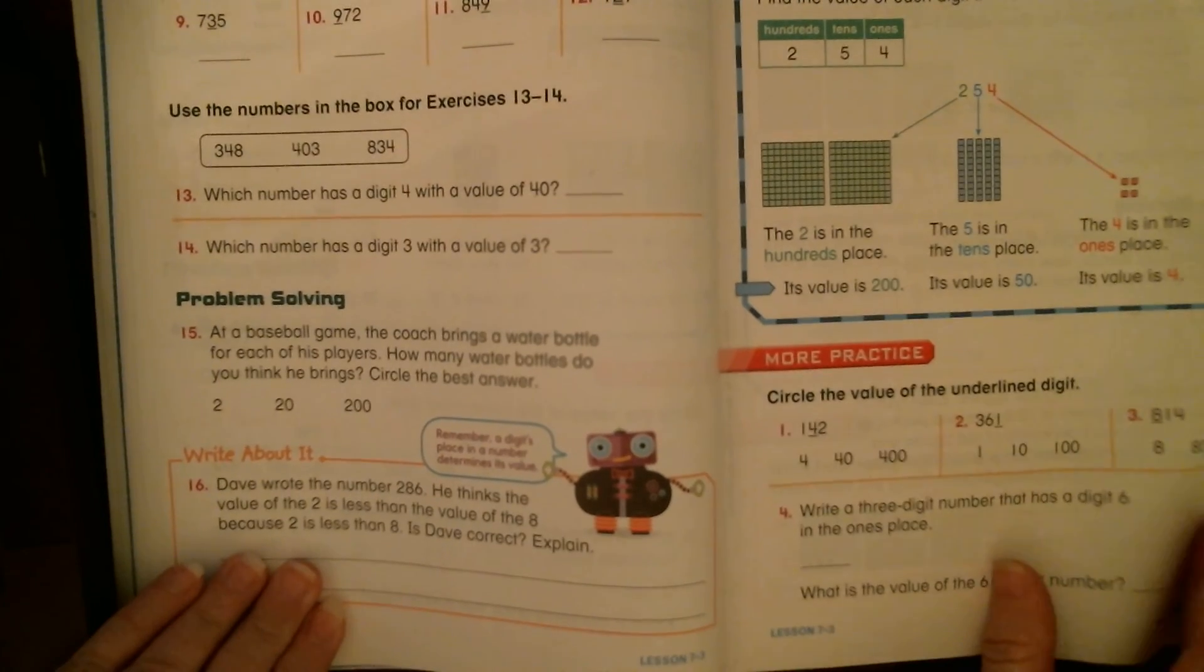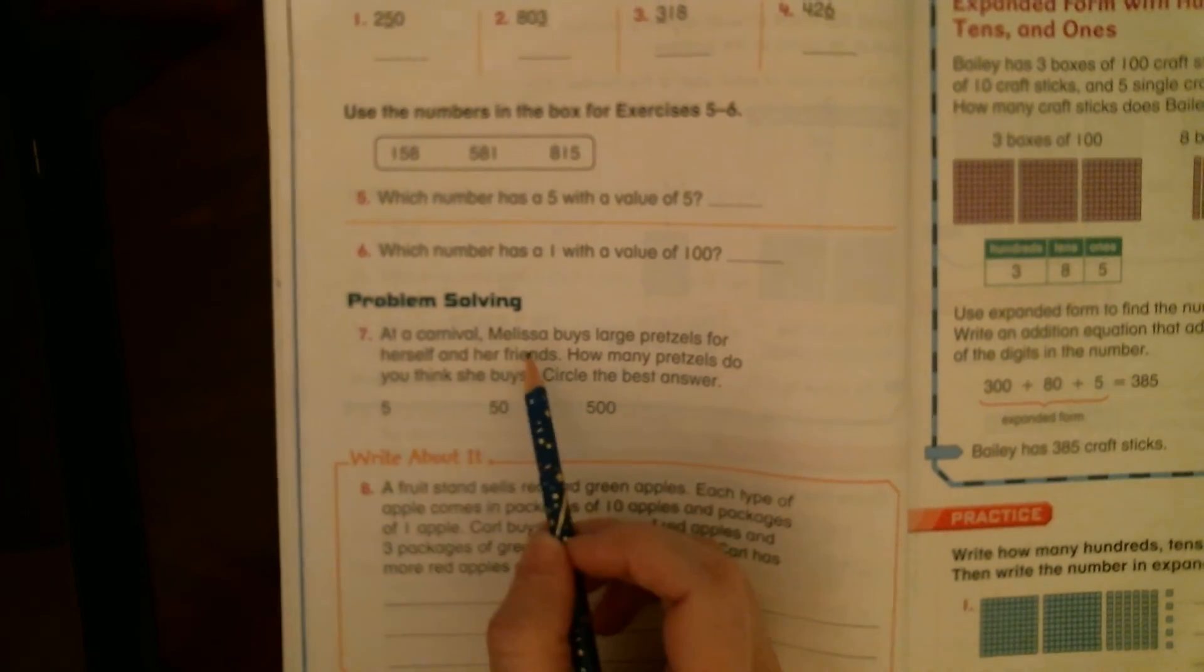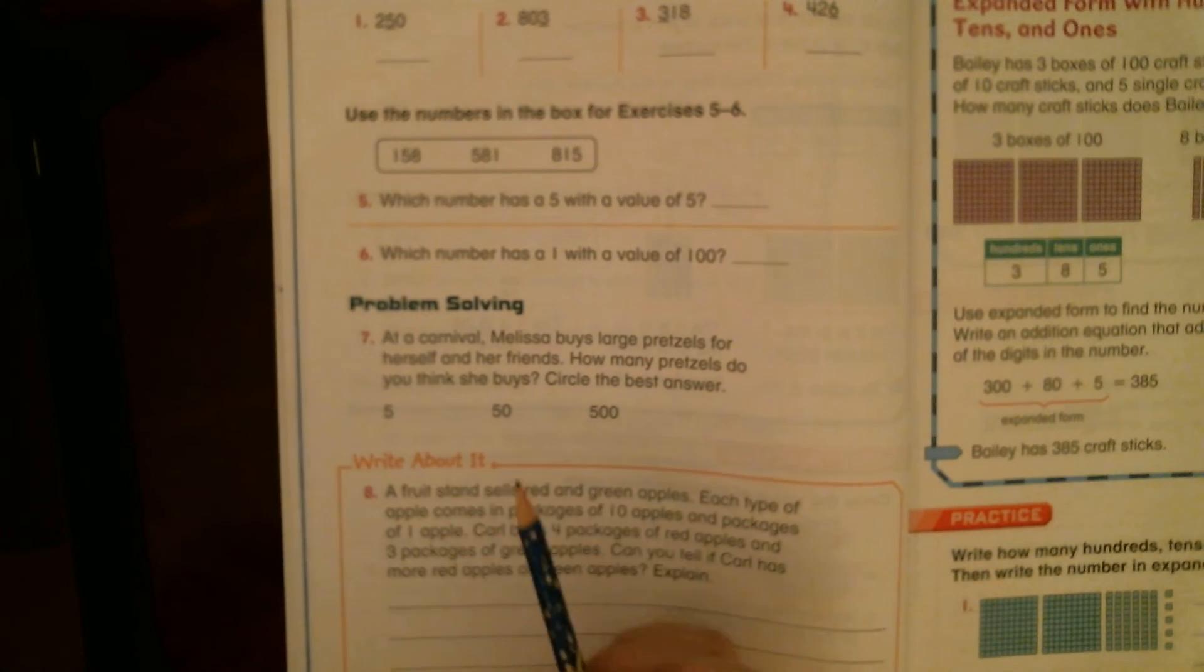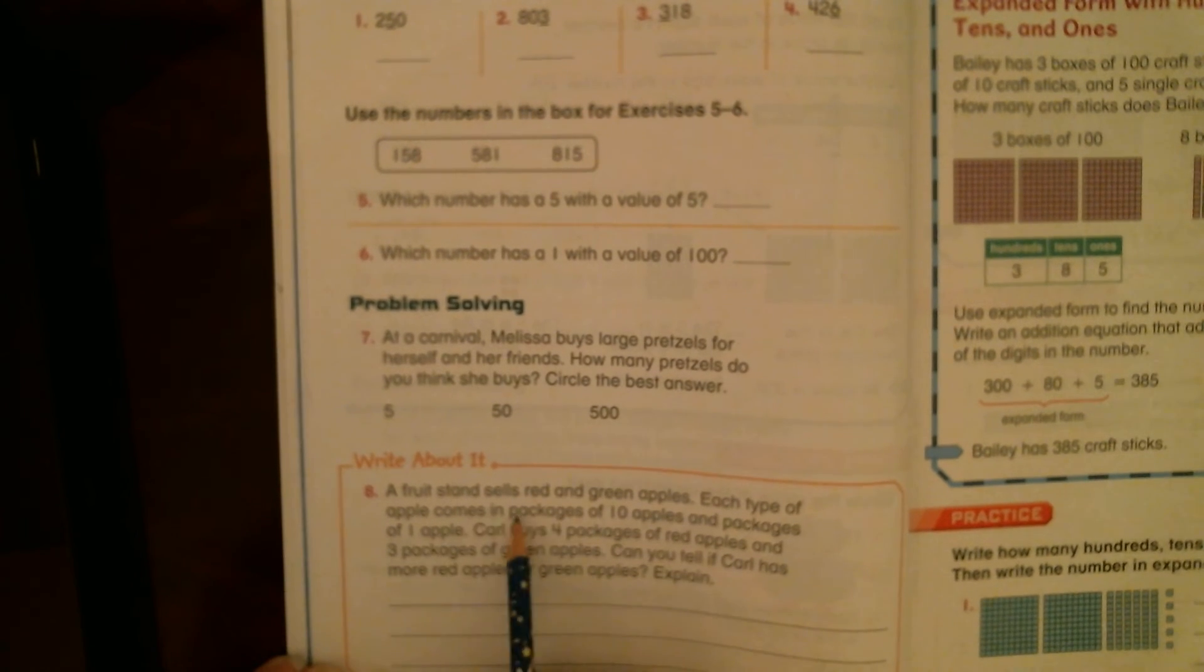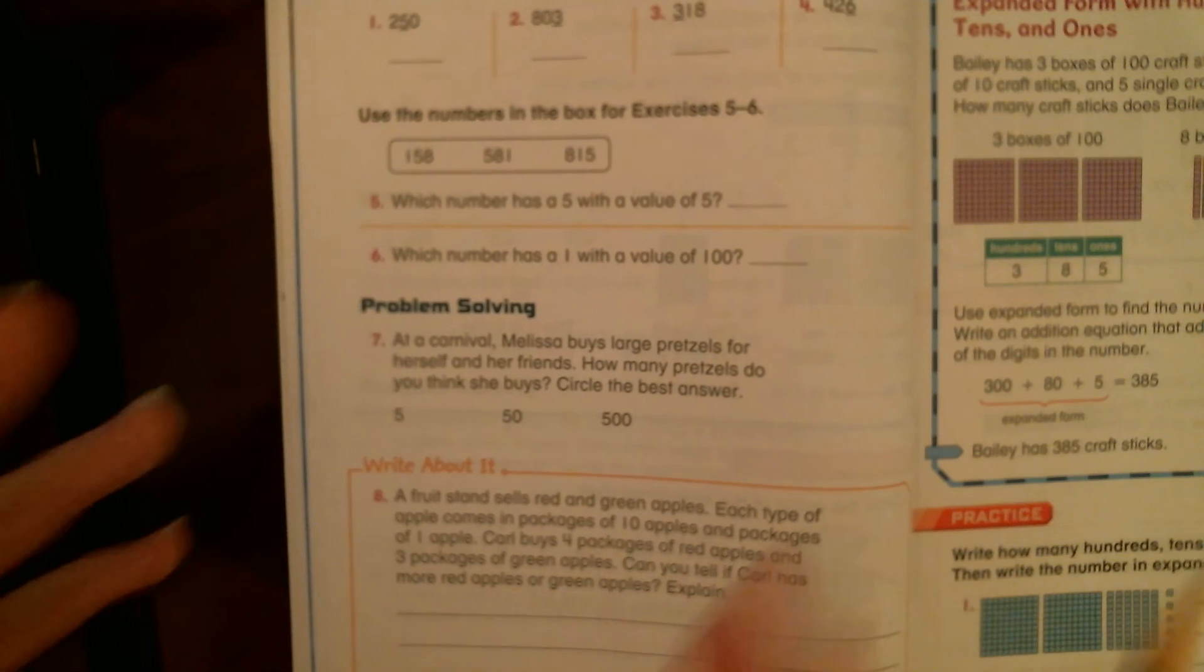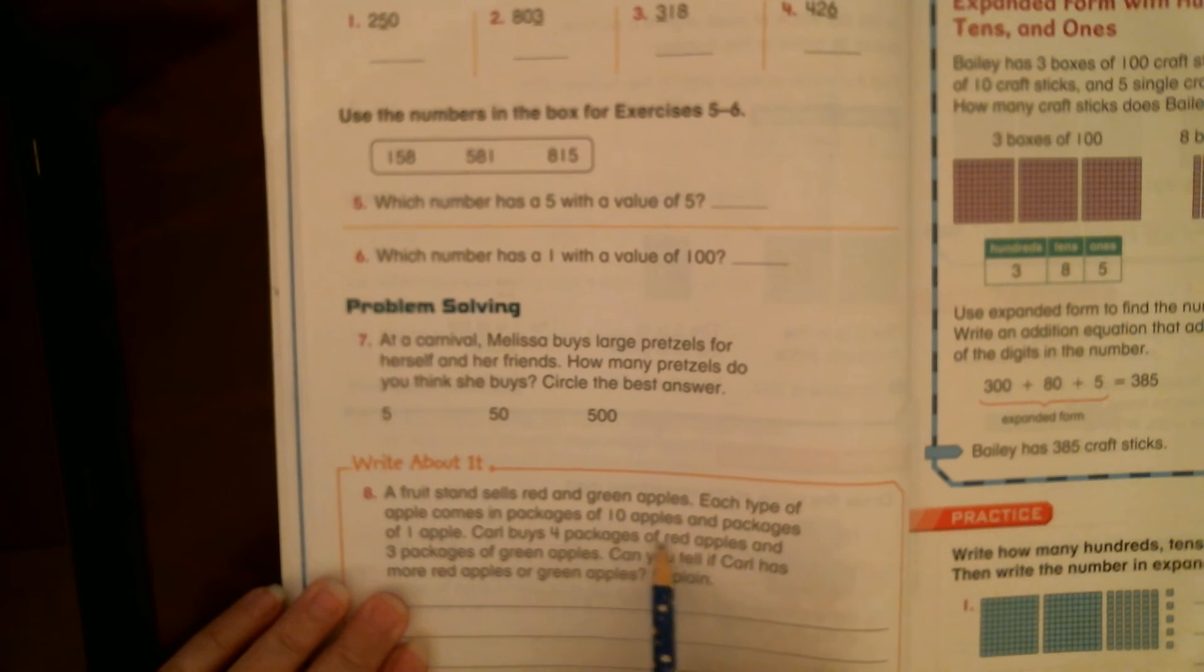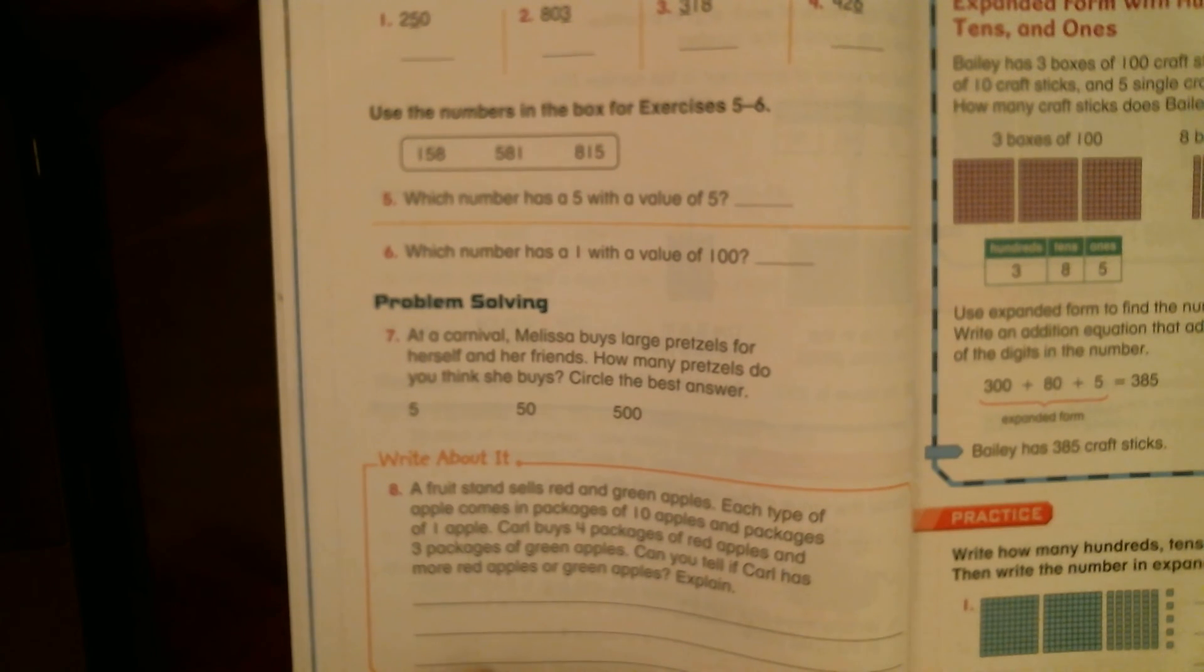Remember, guys, we're thinking about value and place value. So try to use those words in there. You're going to continue on this page doing the exact same thing. It's another model of what we did. Exact same thing. All right? Think about Melissa being at a carnival with her friends. If she buys pretzels for herself and her friends, about how many pretzels would she buy? And then a fruit stand sells red and green apples. Each type of apple comes in packages of 10 apples and packages of one. So imagine a bag of apples with 10 in it, or you can get a single bag with one apple in it. Carl buys four packages of red apples and three packages of green apples. Can you tell if Carl has more red or green apples? Are you able to tell that based on the information they gave you?